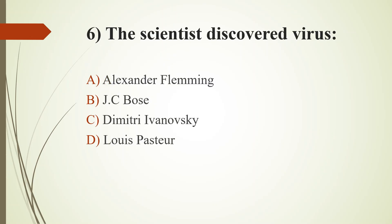Sixth question: The scientist who discovered virus. Option A: Alexander Fleming. Option B: J.C. Bose. Option C: Dmitry Ivanovski. Option D: Louis Pasteur. Answer is Option C, Dmitry Ivanovski. In 1890, Dmitry Ivanovski found the cause of tobacco mosaic disease, which is an infection that causes tobacco leaves to discolor. The father of virology is Martinus Beijerinck.